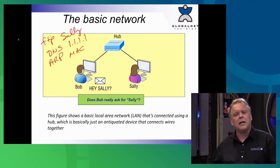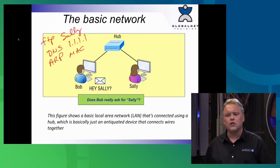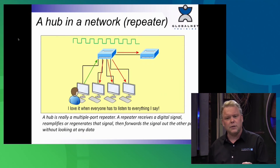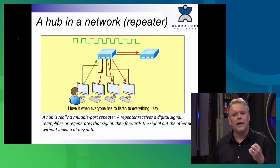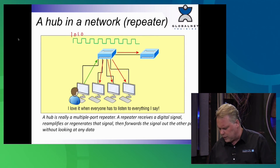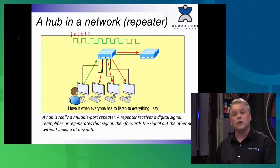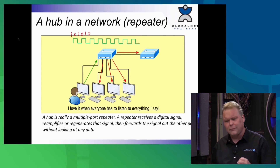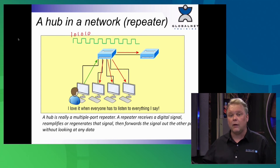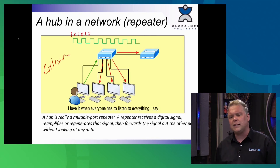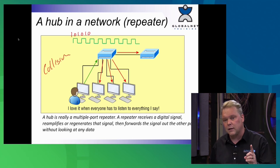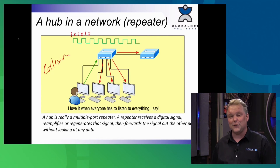Now Bob can communicate to Sally. On this basic network, we created connected segments together so they can share resources like files and printers. In the basic network, we have hubs, and all they read is the digital signal — they work at Layer 1. Inside, we encode the ones and zeros. In Ethernet, we use something called Manchester encoding, but we also use analog signaling today. When Bob sends a digital signal, the hubs don't segment the network — they just take that digital signal, reamplify it, and send it out every port. So this is considered one big collision domain, meaning only one device can communicate at a time.